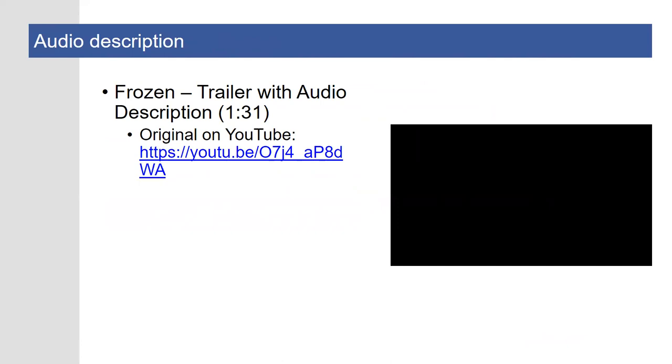Depending on the nature of the video you share via social media, it may also need audio descriptions. Audio descriptions are beneficial for users with visual disabilities. A standard audio description narrates the visual parts of the video and is played in between the video's dialogue and other essential sounds. Here's a brief example from a trailer for the movie Frozen — the audio description is supplied by a female-presenting voice that narrates the visual action in the video.